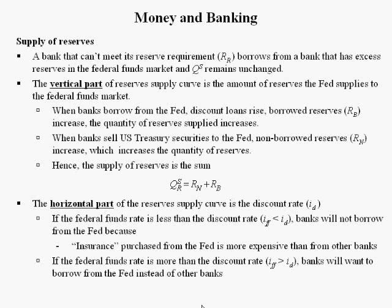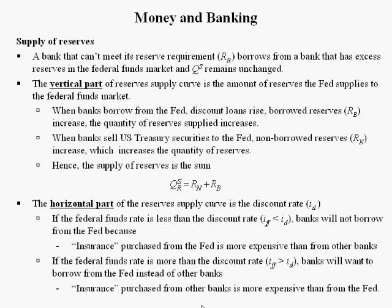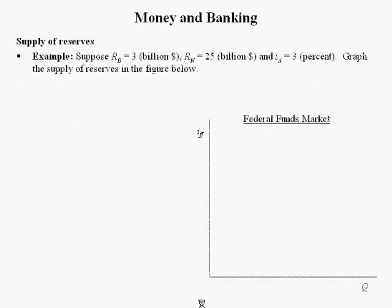Now when the Federal Funds Rate is more than the discount rate, banks will want to borrow from the Fed instead of other banks for the opposite reason. This so-called big withdrawal insurance purchased from other banks is more expensive than it is from the Fed.